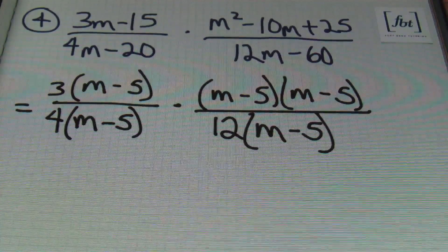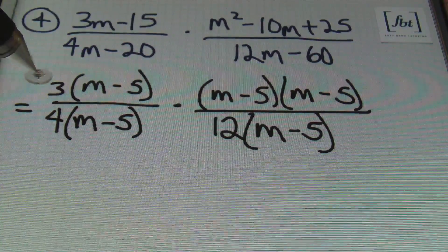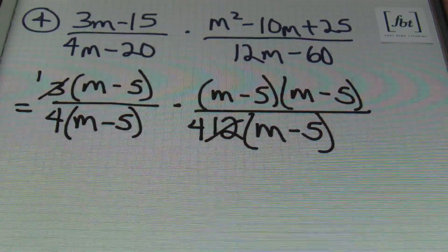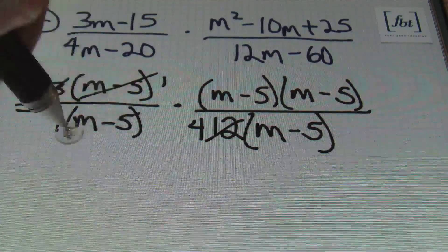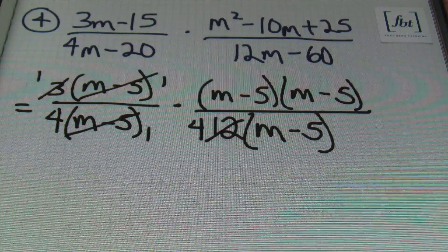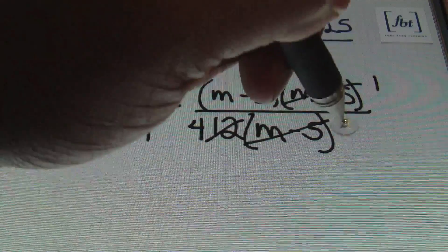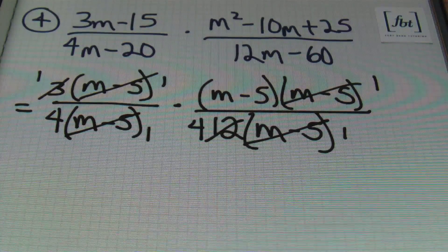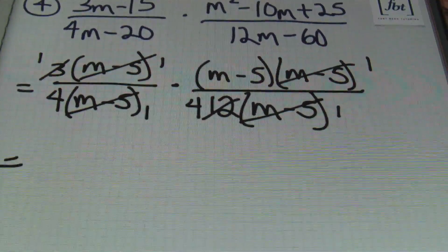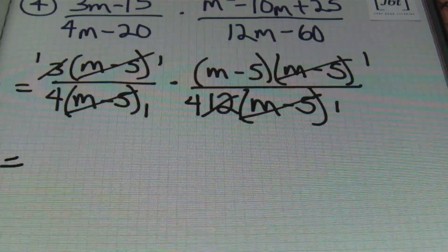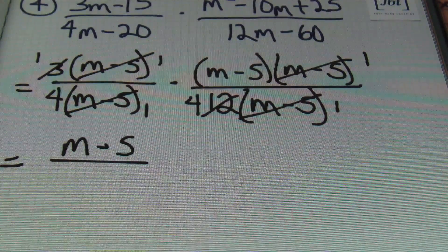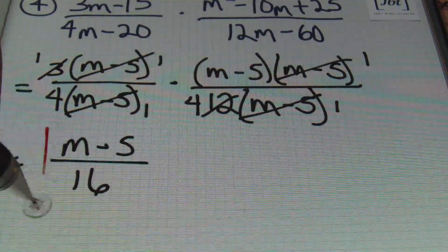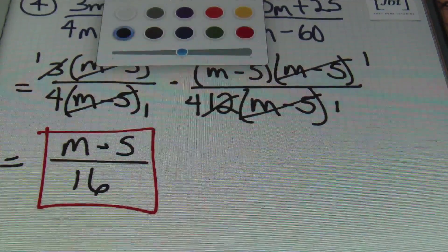I'm looking for an opportunity to simplify before I multiply. I have 3 and 12 here — 3 goes into itself once, 3 goes into 12 four times. I can cancel out the m minus 5 factors — they go into themselves once. I also have another m minus 5 in the second fraction to cancel. Multiplying everything straight across, I end up with m minus 5 in the numerator over 4 times 4, which is 16. And that's the answer.